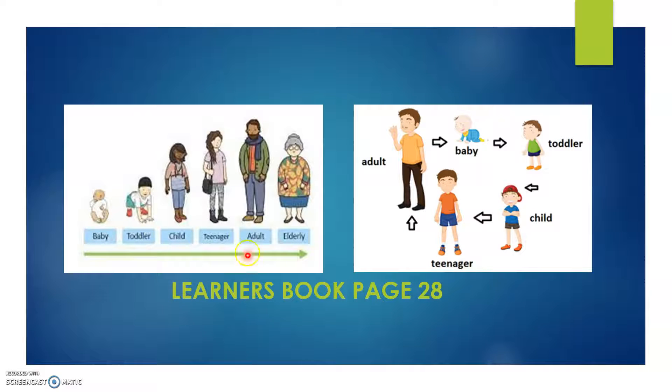On your learner's book, the life stages of humans are drawn. First stage is baby, then toddler, child, teenager, adult, and elder. These are the life stages of humans. As the circle is drawn on your learner's book page 28, you will circle the stage where you are right now. Are you a toddler, a child, or a teenager? You will circle your current life stage.